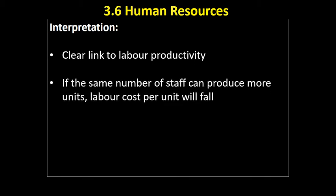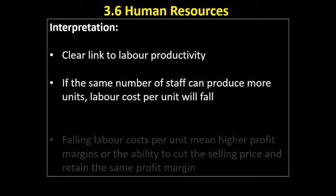If the same number of staff can produce more units, the labour cost per unit will fall. Alternatively, if you get rid of some staff and manage to retain your output levels, you're spending less on labour and still making the same amount — that will mean the cost per unit has fallen.